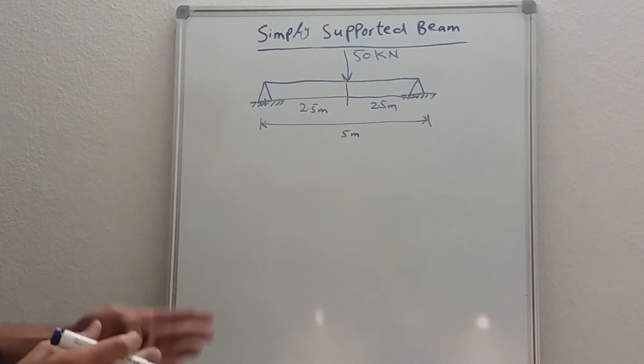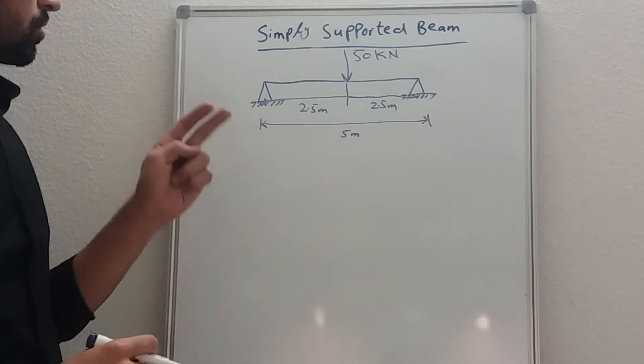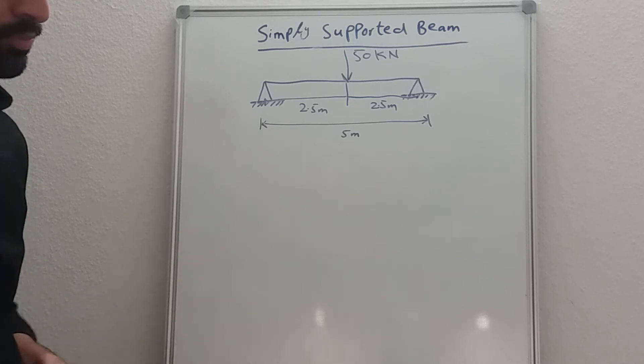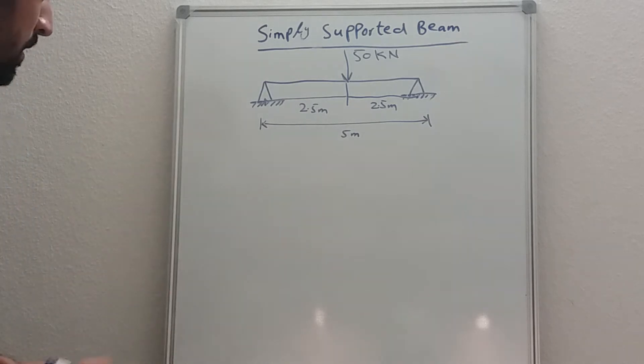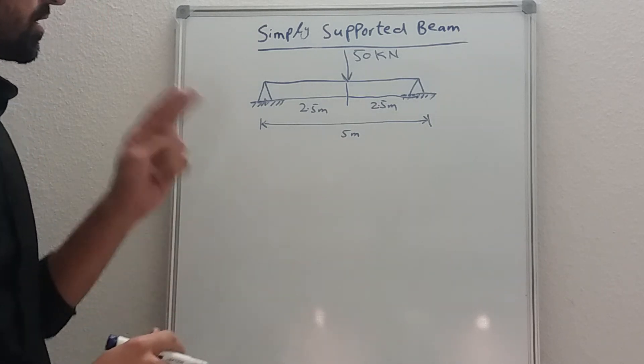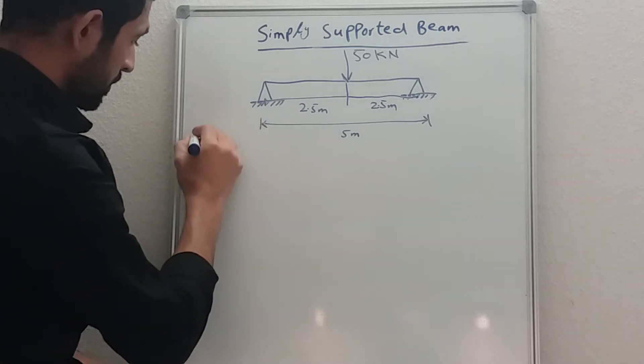Okay, so there are two methods to solve the support reactions, to calculate the support reactions. There are two simple methods. One of them is very simple which I'm going to do it now, and this method is only valid for symmetrical beams. So method one.